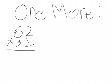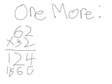Let's try one more. And we could also do the problem like this: 2 times 2 is 4, 6 times 2 is 12, 3 times 2 is 6, and 6 times 3 is 18. And then we put the 0 on the end. Then we add those.